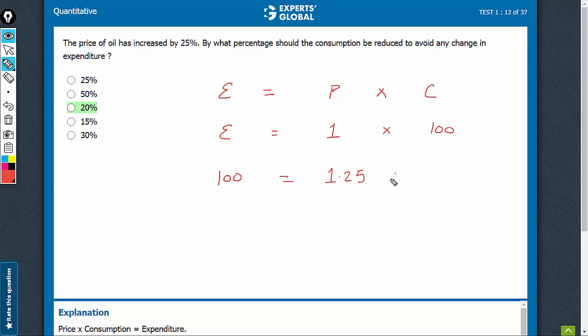So, 100 is equal to 1.25 into, let's say, consumption C. That tells us that consumption has to be brought down to 100 upon 1.25, which is 80.